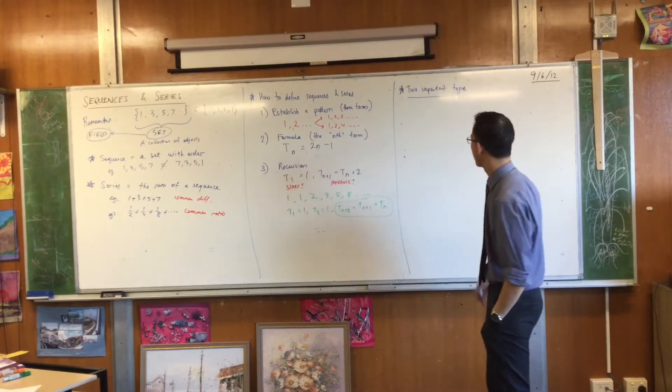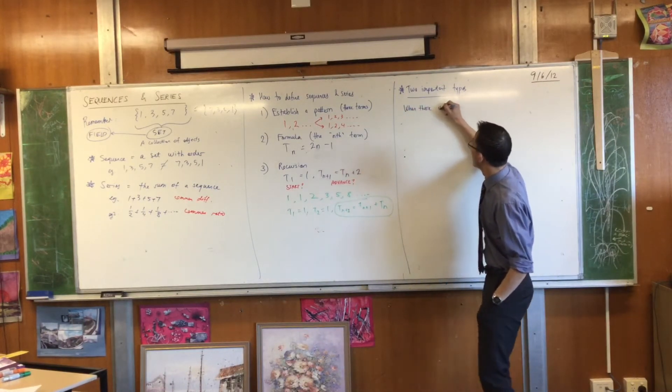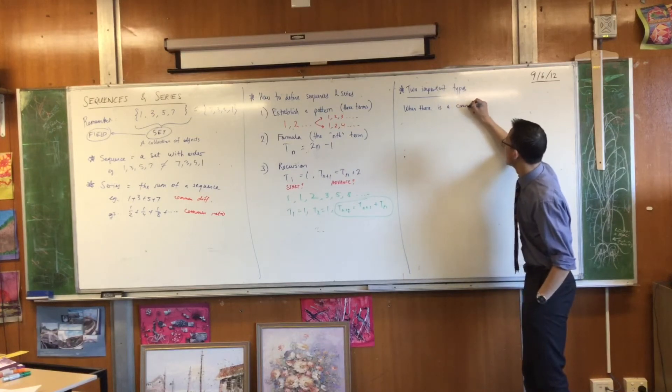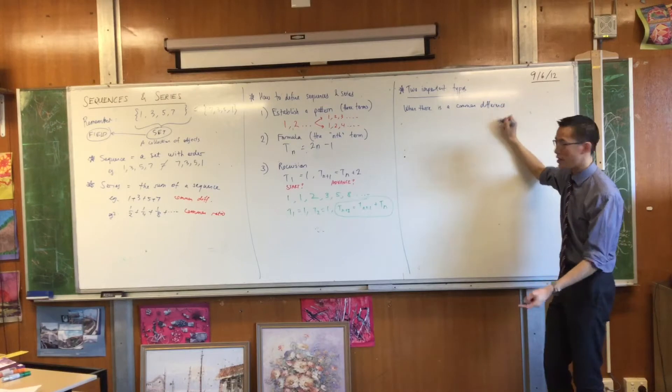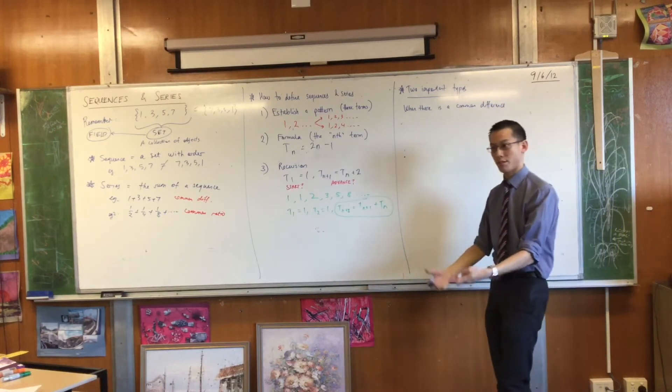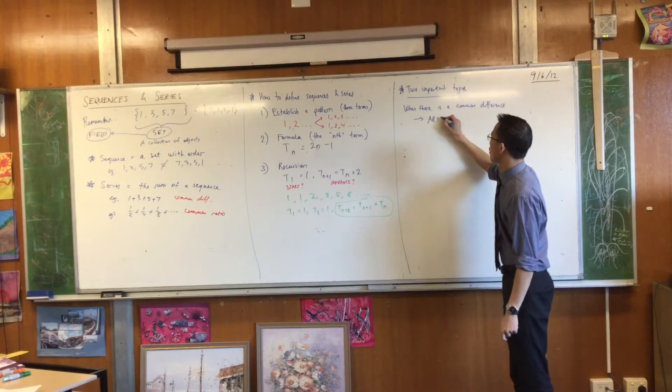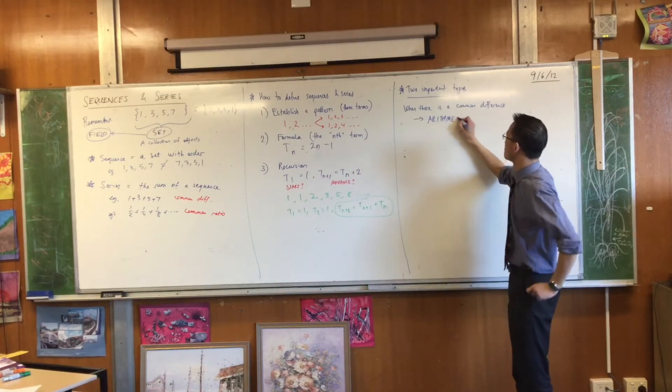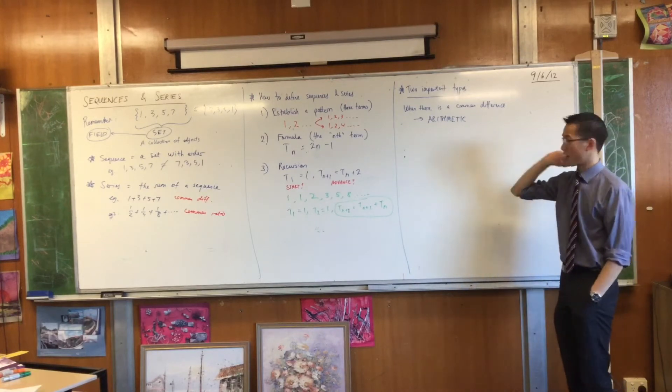So 1 plus 2 plus 5 plus 7. When there is a common difference, we call this kind of series an arithmetic series or an arithmetic sequence. That's a really important phrase so I'm going to put it in capitals.